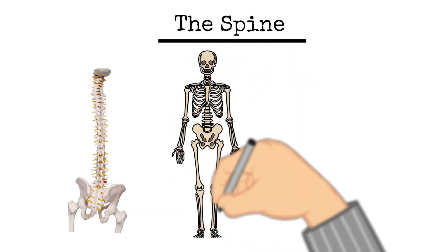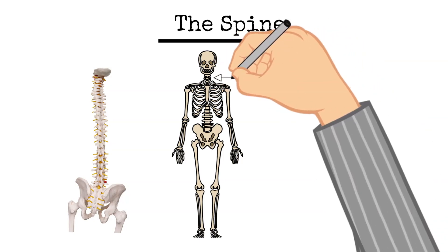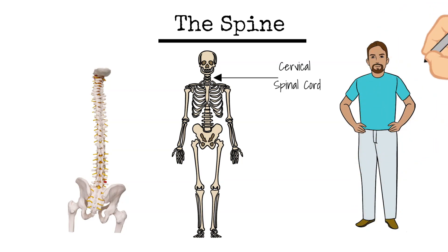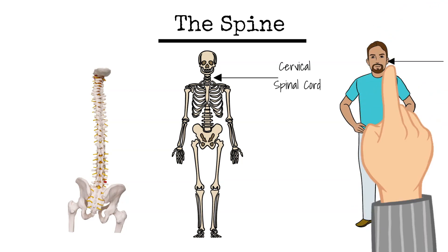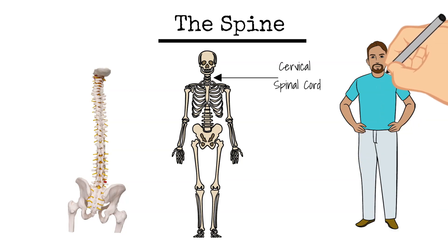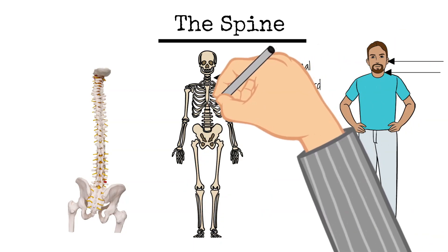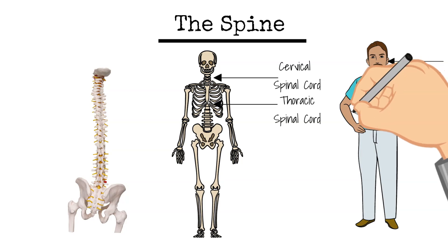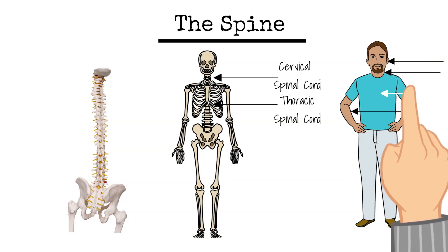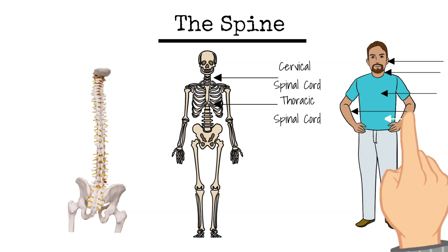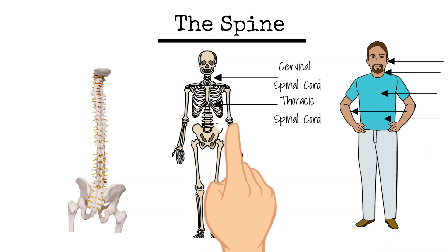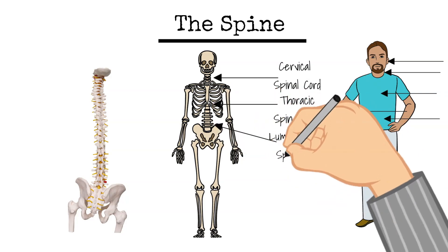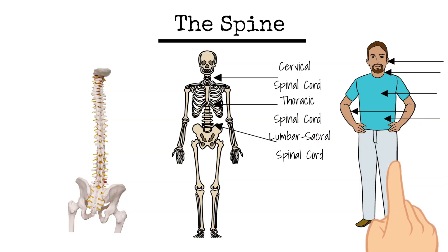Each section's name describes the part of the spine it passes through. First, the cervical spine is up at the top by your neck and sends nerves to your face and neck. Next is the thoracic spinal cord, and this part sends nerves to your arms, chest, and abdomen. And last is the lumbar sacral spinal cord, and that part sends nerves to the lower body.